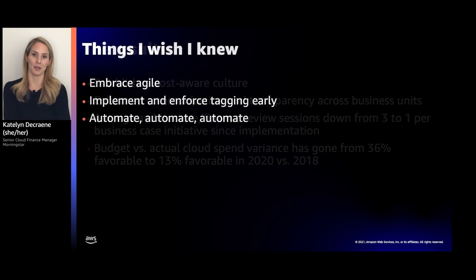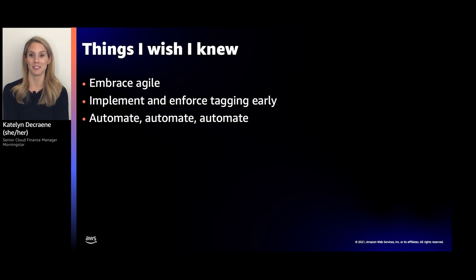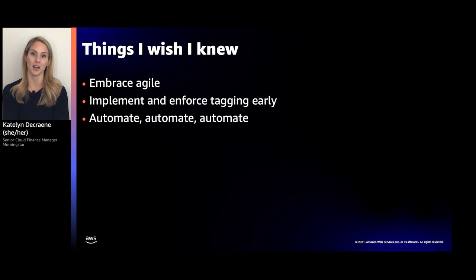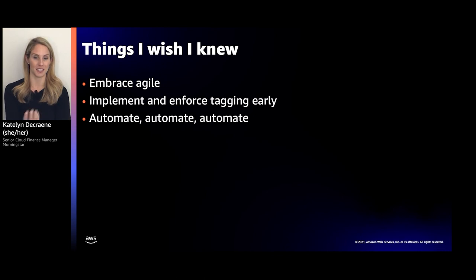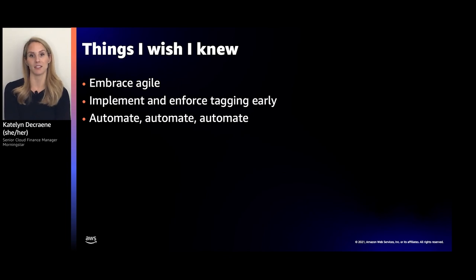Things I wish I knew when I started this journey. First, embrace agile. In order to fully utilize the benefits of public cloud, you need to adopt an agile mindset — this was new to me from a finance standpoint, and I think it's critical to be successful in controlling costs and governing in the cloud. Second, implement and enforce a tagging strategy early. We defined standards and put them out there, but enforcement came later down the road — the quicker you get ahead of it, the better. Third recommendation: automate, automate, automate. This is the only way you can survive at scale in the cloud.